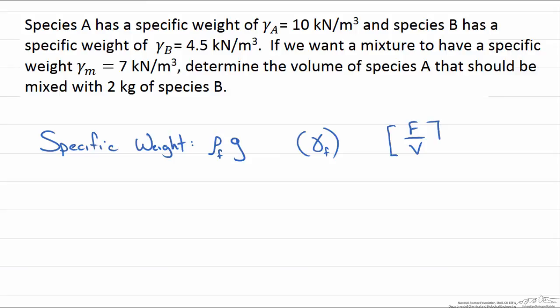So the dimensions for specific weight are written as a force per volume. We know that because if we wrote the dimensions for density which is a mass per volume and multiply that by the acceleration due to gravity, the mass times the acceleration is a force and we get the force per volume. So we are going to use this to help us solve this problem.